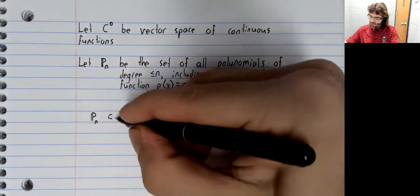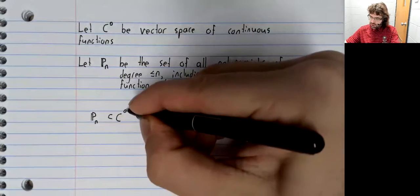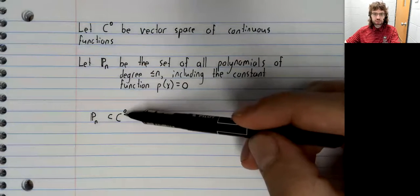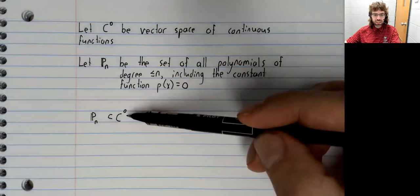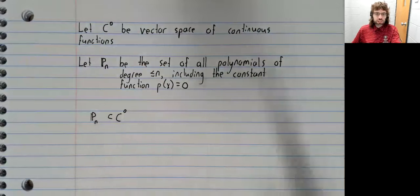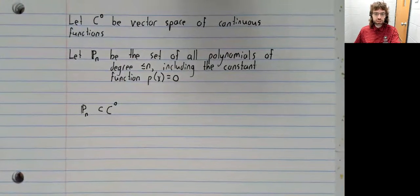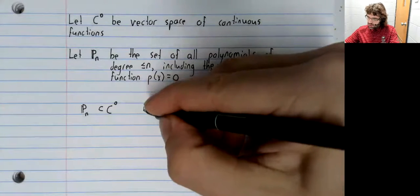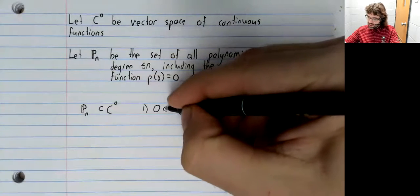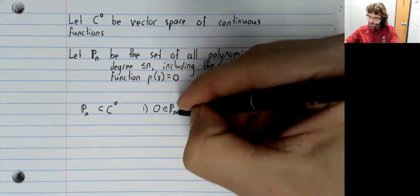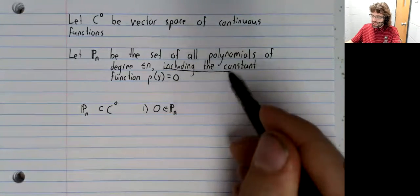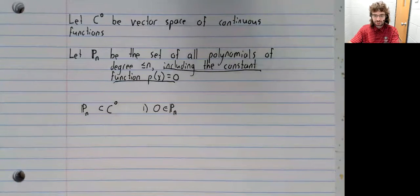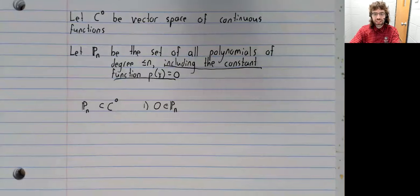P sub n is a subset of C zero. This is standard notation. It's a little different from the notation of the previous video. So polynomials are certainly continuous functions. As for the conditions, condition one is certainly satisfied. We are explicitly including the zero vector, so it's definitely in there.